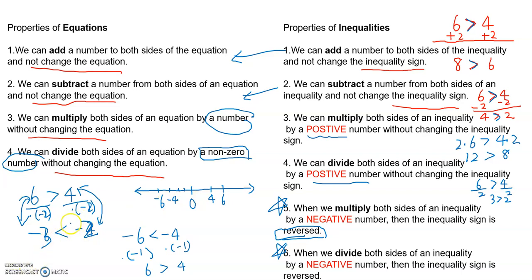Next, we're going to use these six properties to solve an inequality. The only difference from equations is when we multiply or divide both sides of an inequality by a negative number — that's the only time we have to pay attention and reverse the sign. Adding or subtracting any number keeps the inequality sign. Multiplying or dividing by a positive number also keeps the inequality sign.